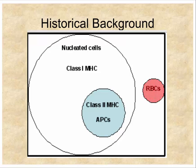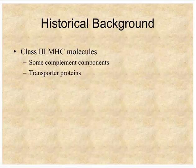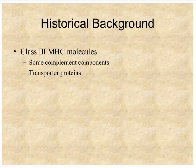Class 3 MHC molecules are a variety of different molecules. Some genes in that locus code for molecules that have nothing to do with the immune response. Others do participate in some way — for example, some complement components are class 3 antigens encoded in the MHC. There are also transporter proteins involved in how APCs process and present antigens to T cells, which are also encoded as class 3 genes.